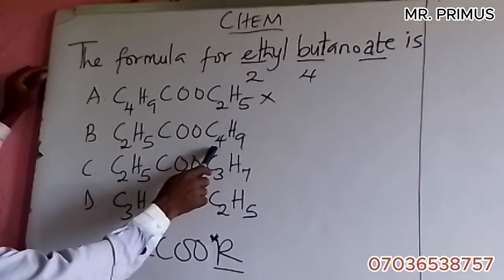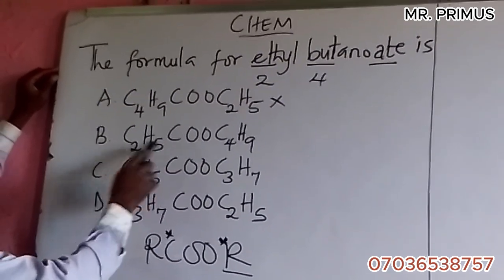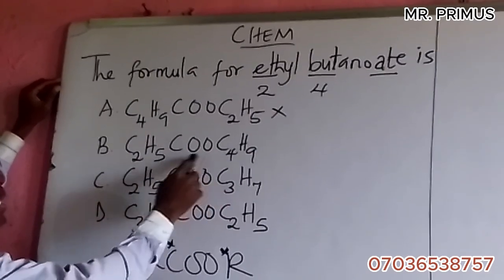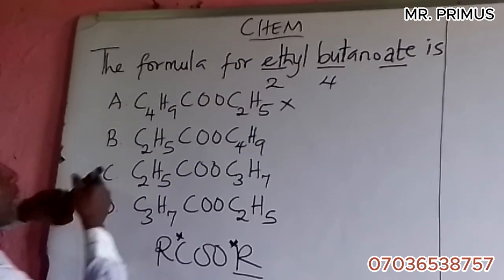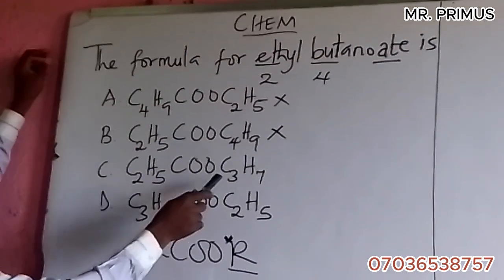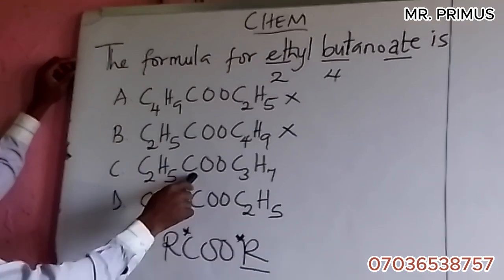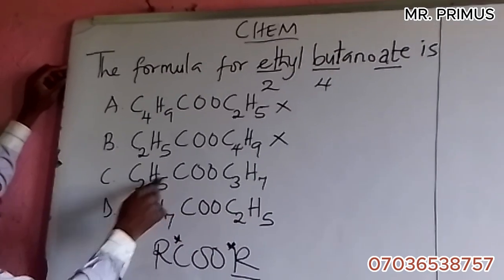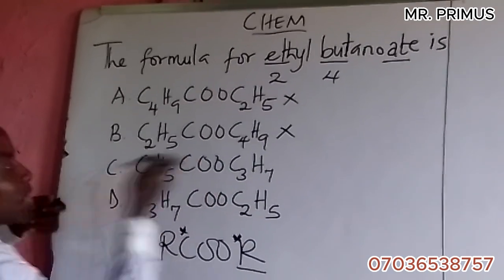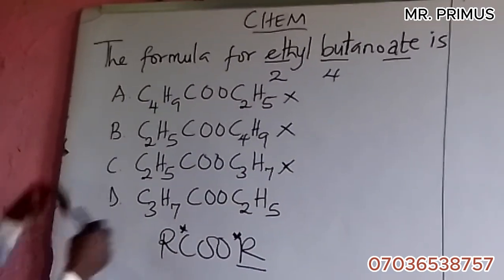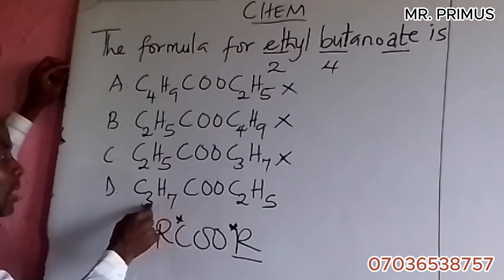Look at this one: C3, propyl propanoate - propyl plus three carbons, so this is not it. Now let's look at this one: C2, ethyl, one plus three, four - ethyl butanoate. Ethyl butanoate!